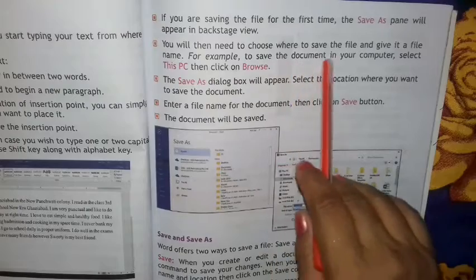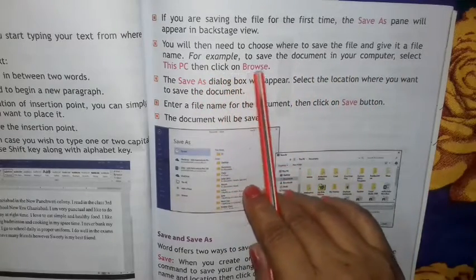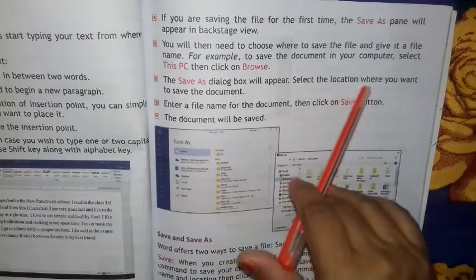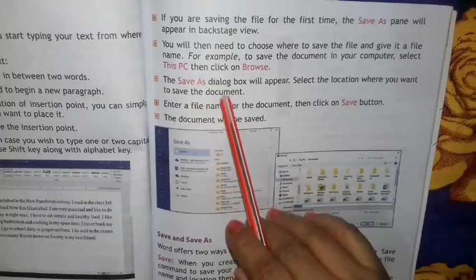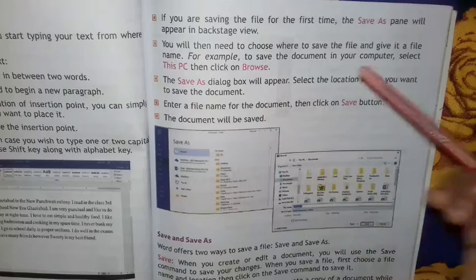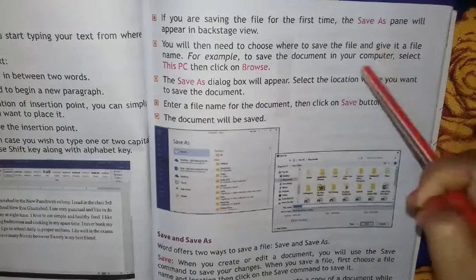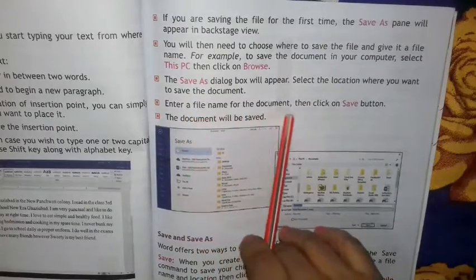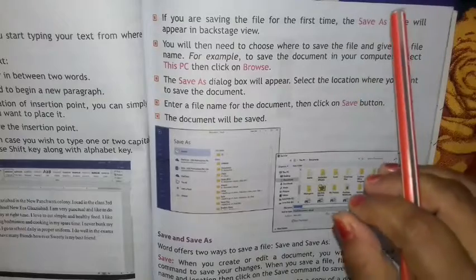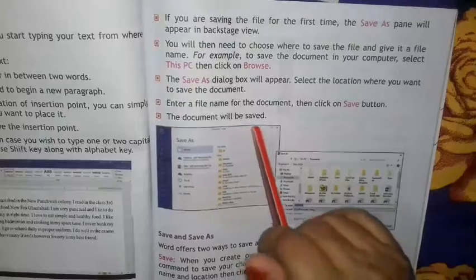For example, to save the document on your computer, select This PC, then click on Browse. The Save As dialog box will appear — select the location where you want to save the document. उस document का नाम देना पड़ेगा, फिर Save As dialog box में जाके कहाँ पर save करना है वो चुनना पड़ेगा। Enter a file name for the document, then click on the Save button — तो document save हो जाएगा।